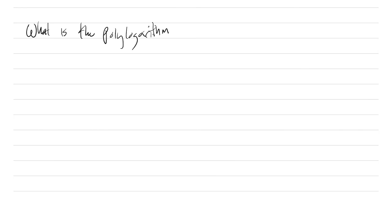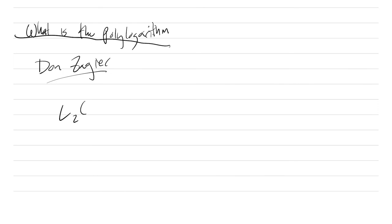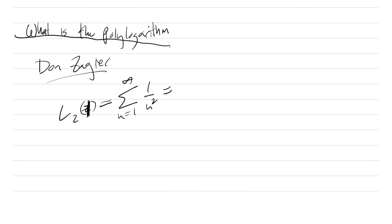The polylogarithm is something that's actually been studied for a good amount of time — people like Don Zagier have studied it, and it goes back even further. For instance, if you look at L_2(Z) = sum from n=1 to infinity of Z^n/n², setting Z=1 gives 1/n², which is the Basel problem: pi² over 6. Euler resolved this back in the 1700s, and there are actually several approaches in calculus textbooks like James Stewart's.